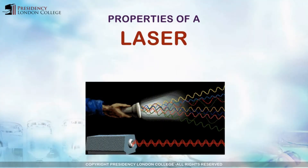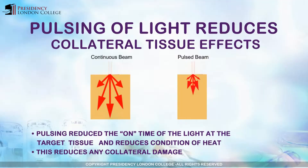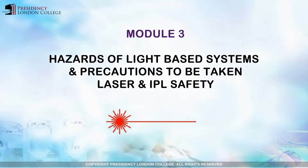Laser light has three main properties. Firstly, pulsing reduces the on time of the light on the target tissue, and there are hazards of laser systems and precautions to be taken.